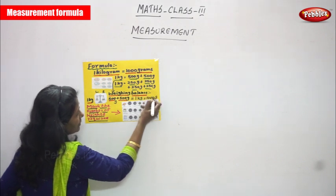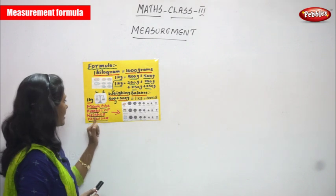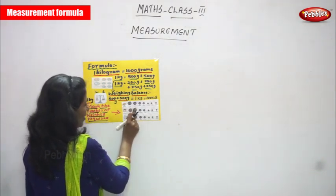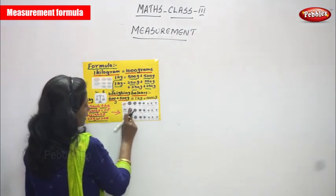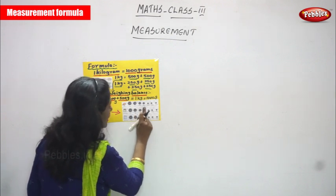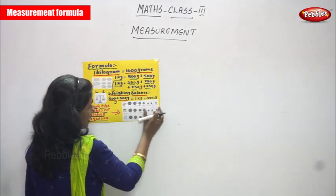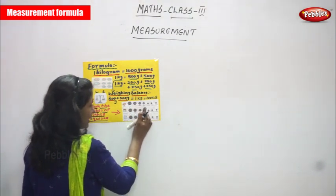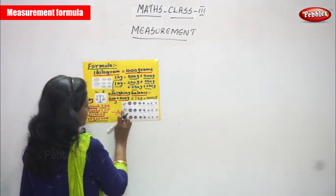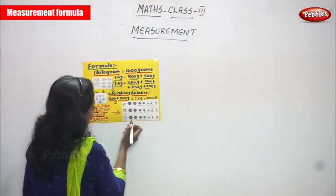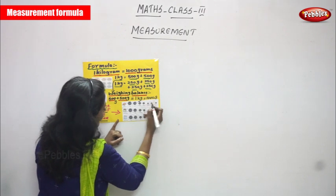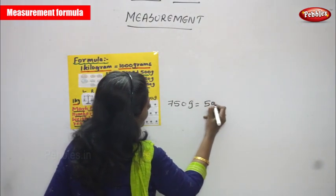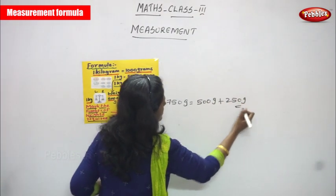Now, mark the number of weights required. This book weighs 750 grams. The available weighing stones are: 2 kilogram, 1 kilogram, 500 gram, 250 gram, 100 gram. For 750 grams, first mark the 500 gram, then mark the 250 gram. So 750 gram is equal to 500 gram plus 250 gram. That is the answer.